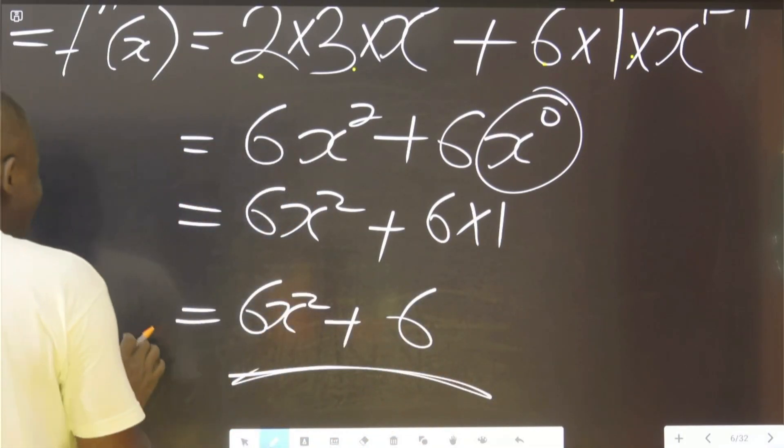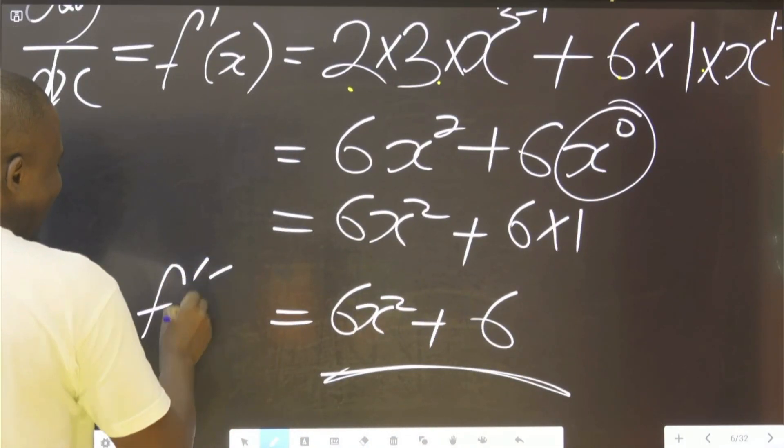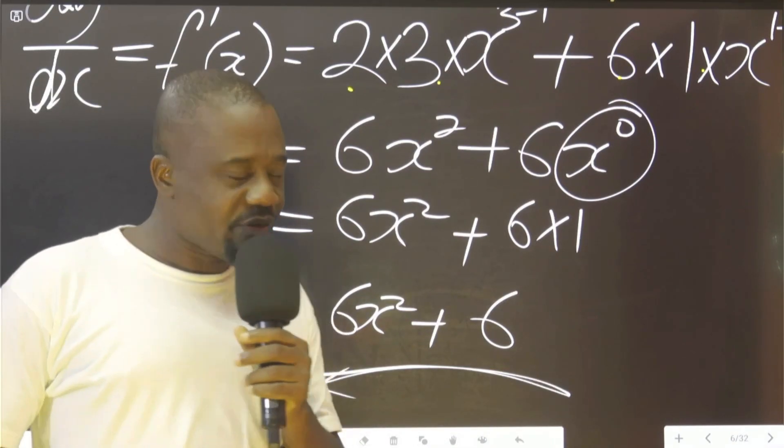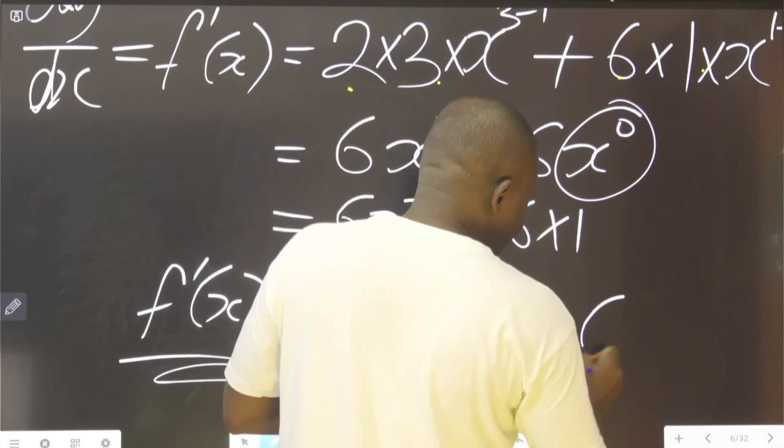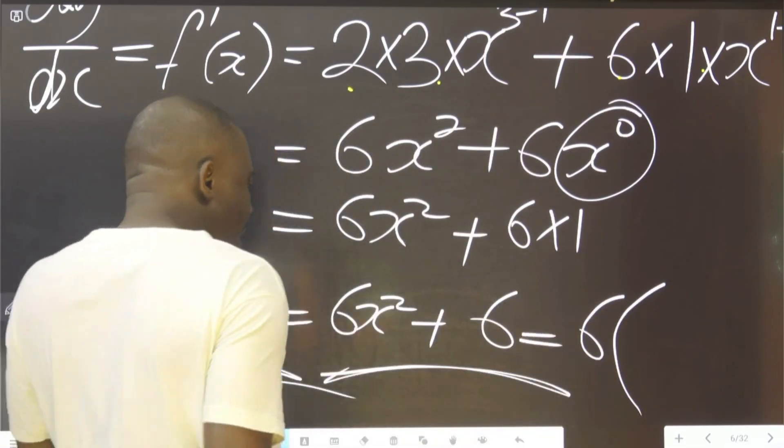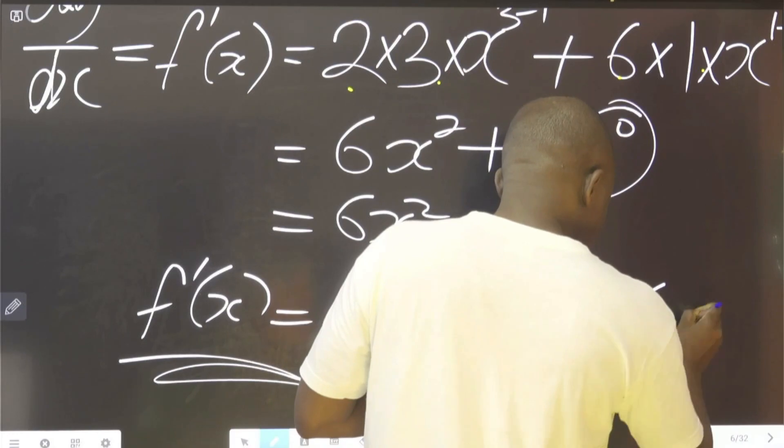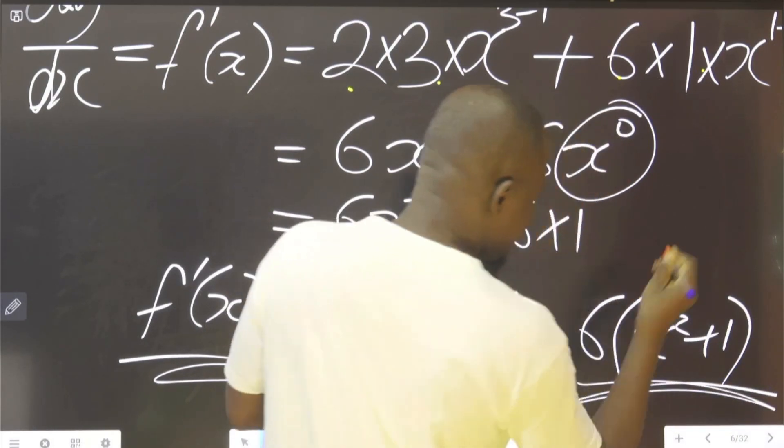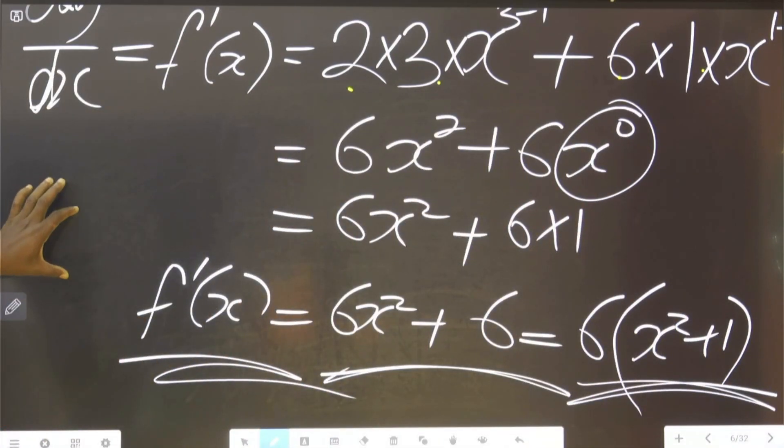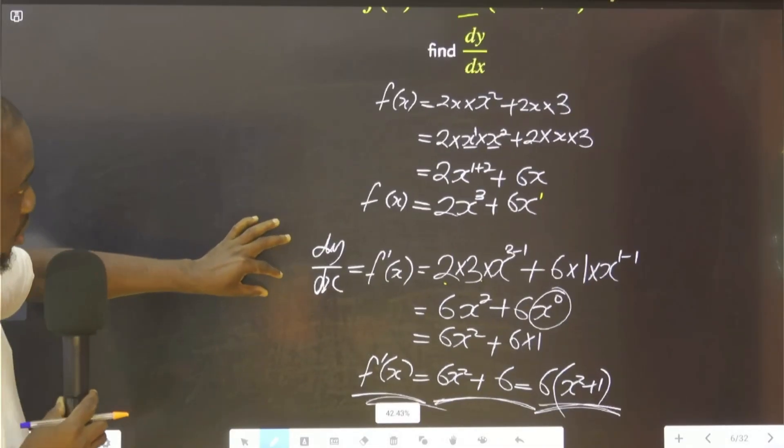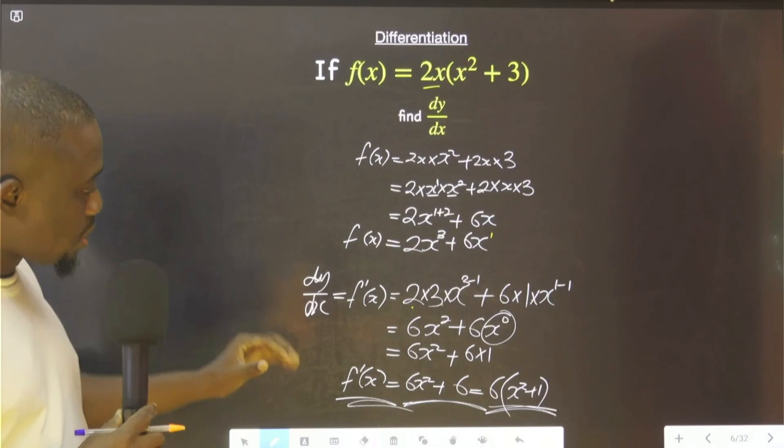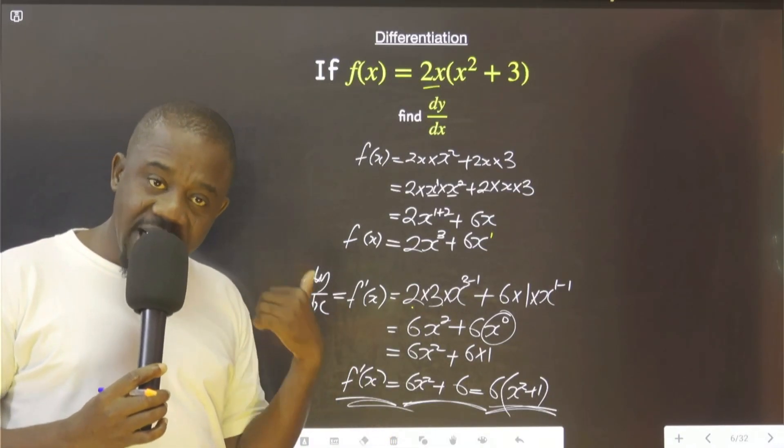This is our dy/dx, which you can also write as f'(x). That is our derivative. But if you want to simplify further, you can be more professional. Say, okay, the common factor, 6(x² + 1). Still the same thing. Anyway you express it, you are good to go. Hope this is understood. Thank you for joining me.